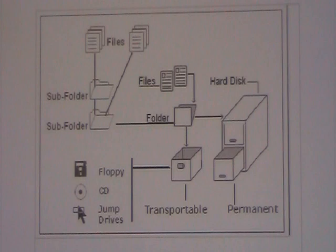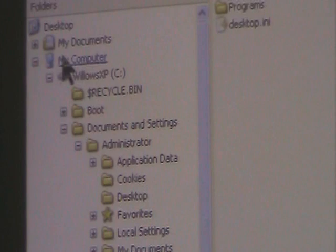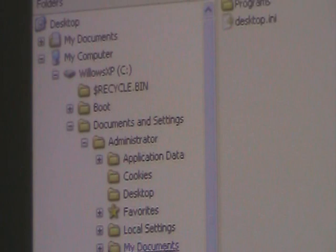What we'll be looking at is the Explorer, which is part of Windows. As you can see on the left-hand side, here are folders. This is a prime folder called My Computer. Within that are subfolders, and within those are additional subfolders. The process is to understand how to relate these and where to put your files.